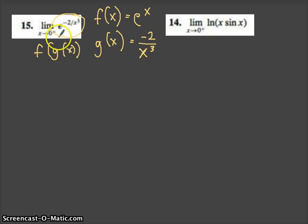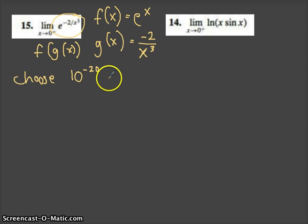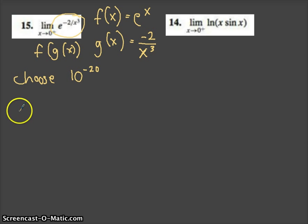What do I mean by a structured way? We've seen before that if I choose a number very close to 0 from the right — like 10 to the negative 20th — I could put that into the function and take a guess. But we don't always want to guess. We want to use what we know about limits to know exactly what happens.